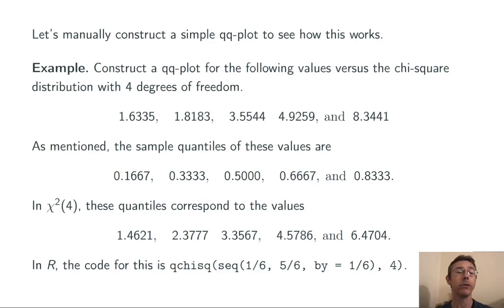Then, we're going to apply the inverse cumulative distribution function for chi-squared of 4 to these values. Here's the code that I used in R to get these numbers. It's a qchisq command. The sequence command inside is just generating the numbers 1/6, 2/6, 3/6, 4/6, and 5/6. The 4 at the end is just the number of degrees of freedom.